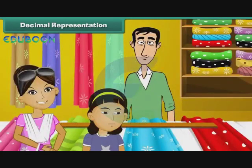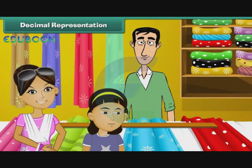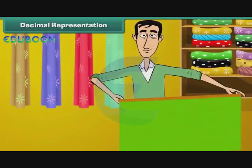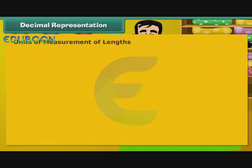Bela accompanies her mother to a saree shop. She asks the shopkeeper the actual length of a saree. The shopkeeper measures it as 550 cm. Bela wants to know if 550 cm can be expressed as metres. To answer Bela's question, let us understand the relationship between the different measures of length.